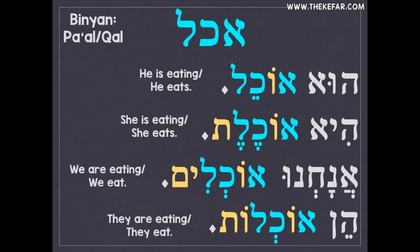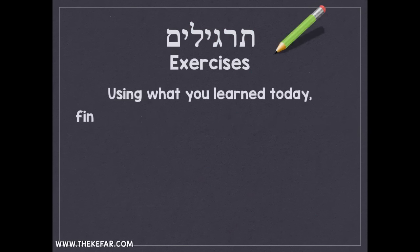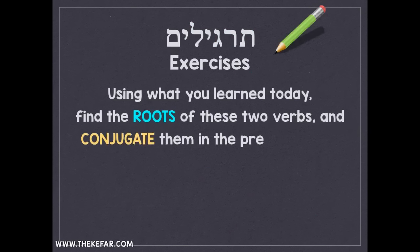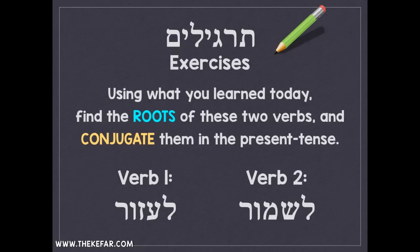All we did was add the letters of our shoresh to the vowel pattern. Now I want to give you a couple of exercises. Using what you learned today, find the roots of these two verbs and conjugate them in the present tense, just as we did with achal. The first verb is la'azor, which means 'to help.' The second is lishmor, meaning 'to guard' or 'to watch over.' In the next verb video, I'll give the answers and review them before moving on to a new verb.